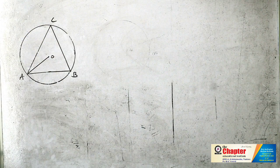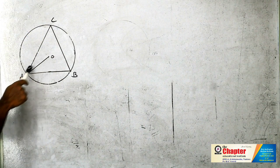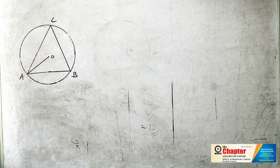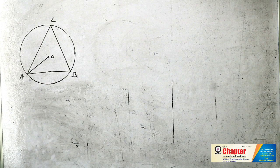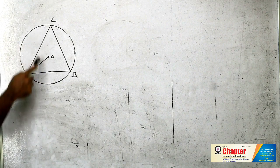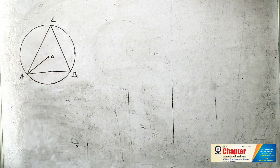Prove that angle OAC plus angle ABC is equal to 90 degrees.